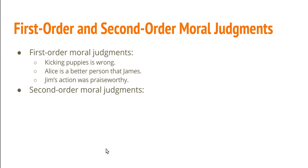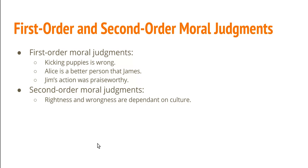In contrast, second order moral judgments are cases in which we're saying that a particular moral property has some second order property. Consider the properties of rightness and wrongness — these are moral properties. If we make the judgment that rightness and wrongness are dependent on culture, we're saying those properties have the second order property of being culture-dependent. Similarly, to say courage is a subjective property is to say of the first order property of being courageous that it has the second order property of being subjective — such that whether it applies to a particular individual depends on who's doing the judging.